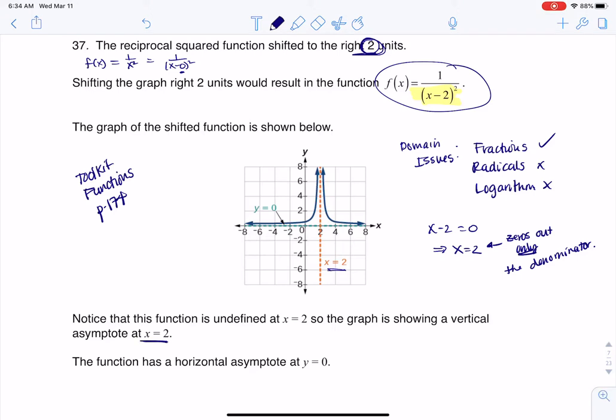The way that we're going to deal with the end behavior is if I look at this rational function, the degree in my numerator is zero, and the degree in the denominator is two. It's zero here because I have a constant, there is no x term, and it's two here because that's the exponent.